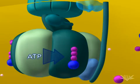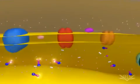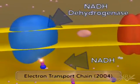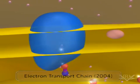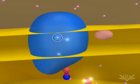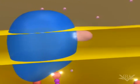This gradient is produced by the action of the electron transport system. As electrons are passed from one carrier to another in the system, protons are pumped across the membrane. This creates the gradient required for ATP production.